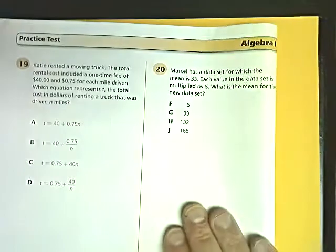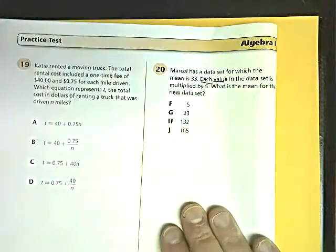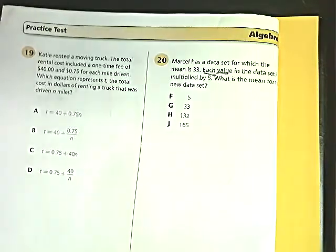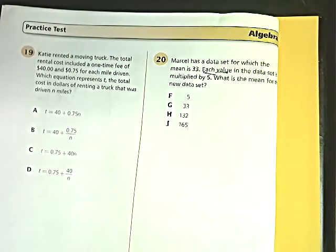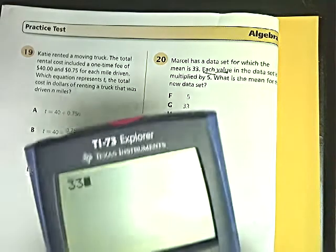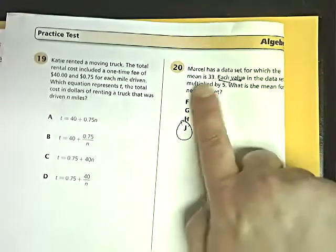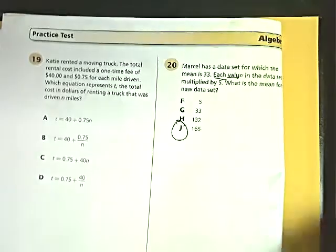The first one we're going to look at is number 20. Marcel has a data set for which the mean is 33. Each value in the data set is multiplied by 5. What is the mean of the new data? If you have a question about mean, median, mode, and range, and they say that all of the values change by the same amount, all you have to do is the math shown. So 33 multiplied by 5 gives you 165. That's the answer.